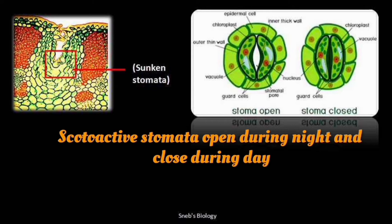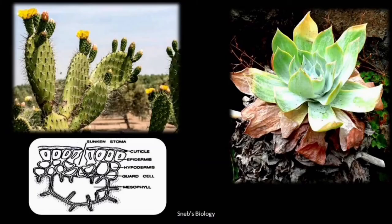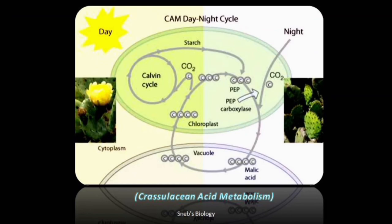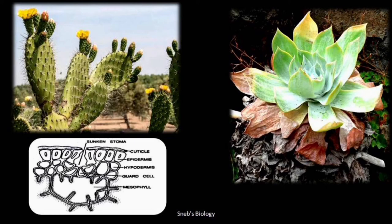Plants in extremely dry conditions have also changed their pathway of photosynthesis — this is called CAM, or Crassulacean Acid Metabolism. They have scotoactive stomata: during night, carbon is fixed in the form of a compound; during daytime, that fixed compound releases carbon, and because light reactions take place during day, ATP and NADPH are available to fix carbon into glucose. CAM is an alternative to the regular C3 photosynthesis cycle.